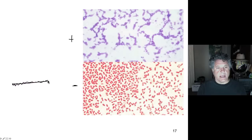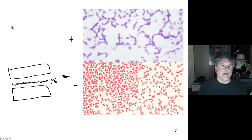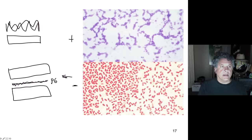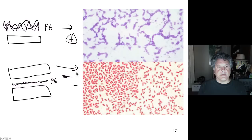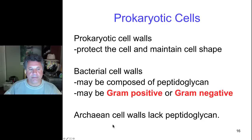Gram-positive bacteria have a phospholipid bilayer and then a thick peptidoglycan cell wall. Gram-negative bacteria have a thin layer of peptidoglycan between an inner membrane and an outer membrane, both of which are phospholipid bilayers. Gram-positive bacteria stain with a particular stain that allows them to be recognized as purple, whereas gram-negatives do not stain with that purple dye. Archaea, the other prokaryotic domain of life, have cell walls but those cell walls lack peptidoglycan.